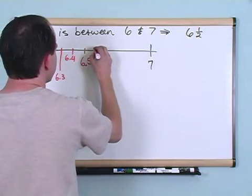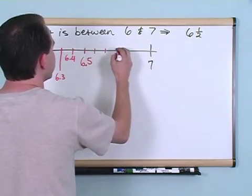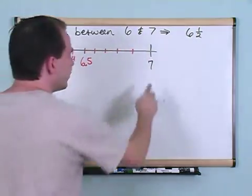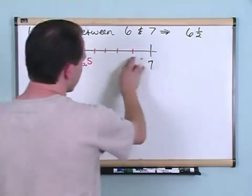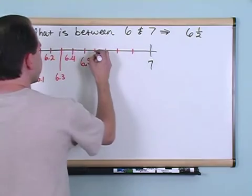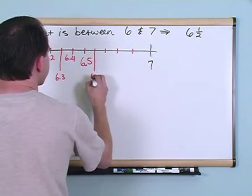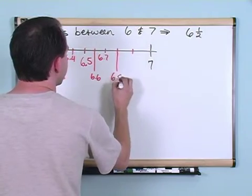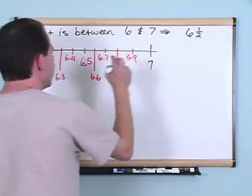So what would come after 6.5? You'd have 6.6, 6.7, 6.8, 6.9, and then 6.10, which is basically just going to roll over. It's not going to be 6.10, it's just going to be 7. So let's continue on here. You'd have 6.6, 6.7, 6.8, 6.9, and then you get to 7.